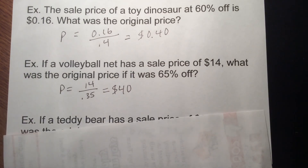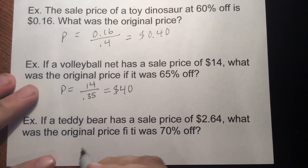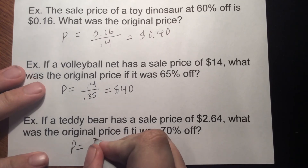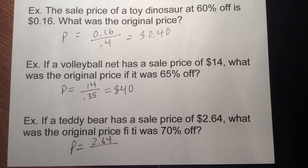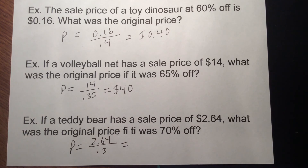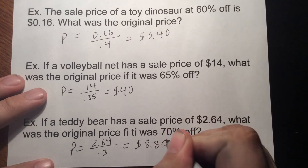And lastly, if a teddy bear has a sales price of $2.64, what was the original price? It was 70% off — sorry, there's a typo there. P equals our price $2.64 over — 100 minus 70 gives you 30%, so 0.3 is our decimal. And if you divide that out, you will get $8.80.